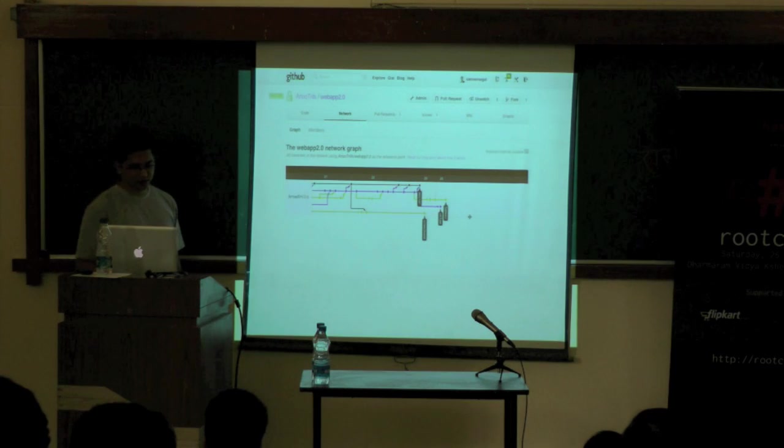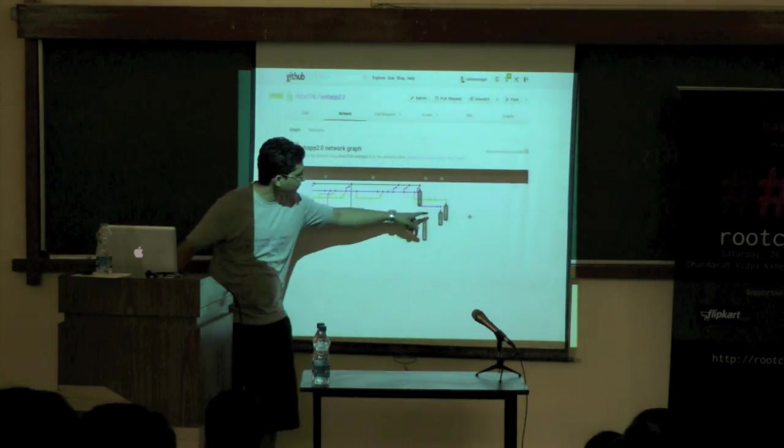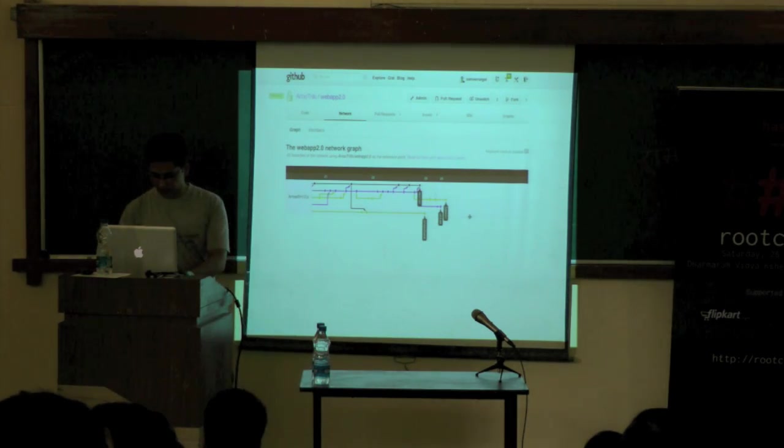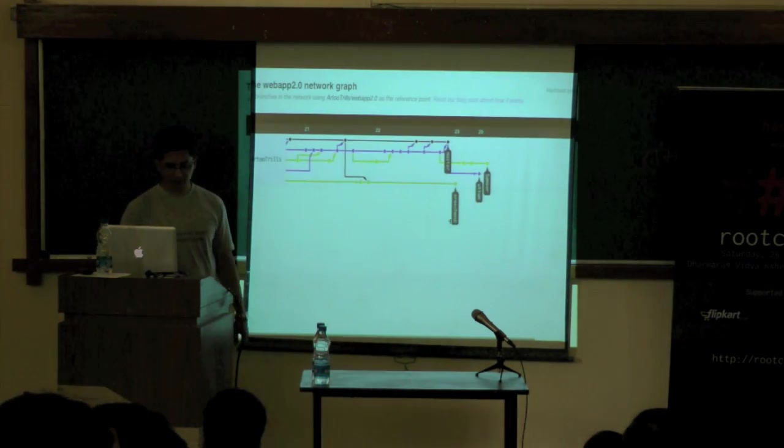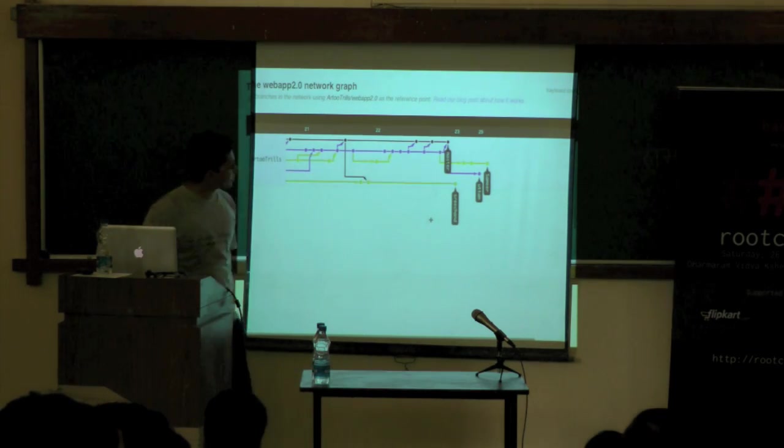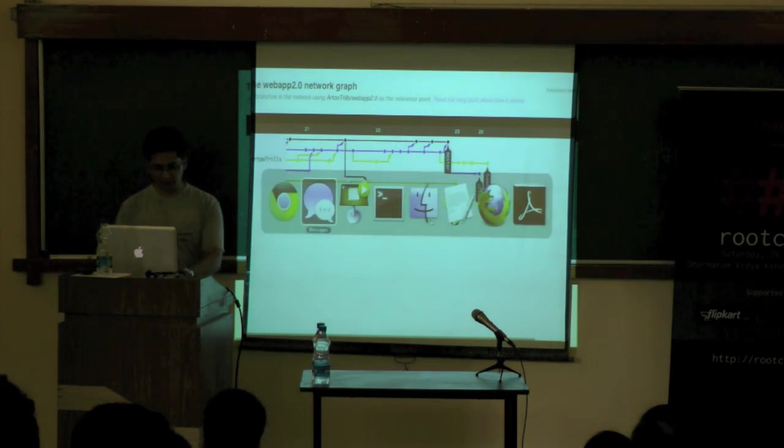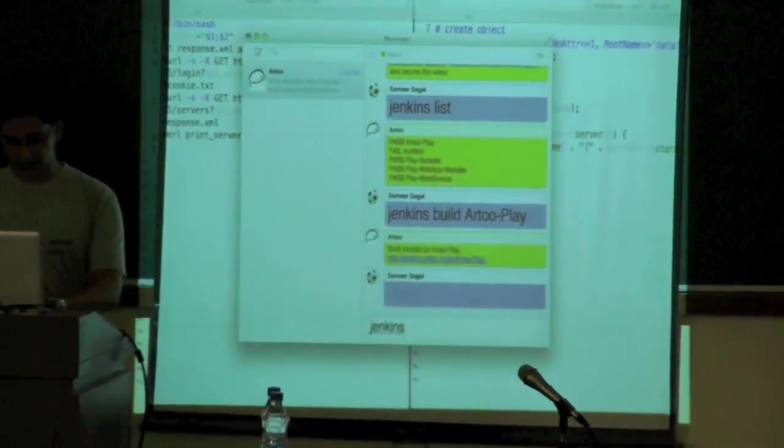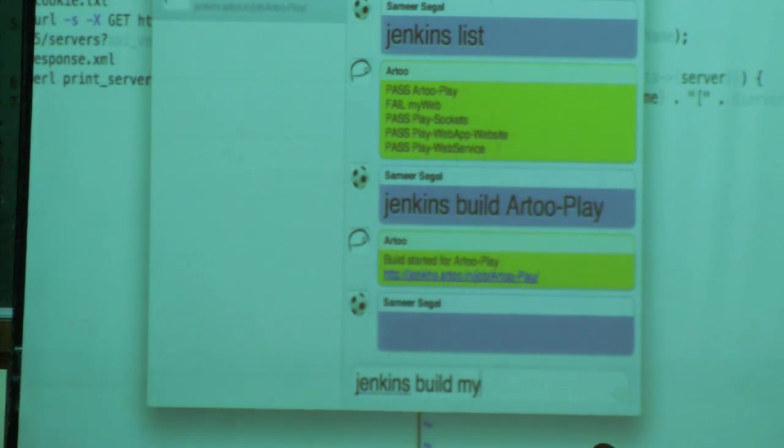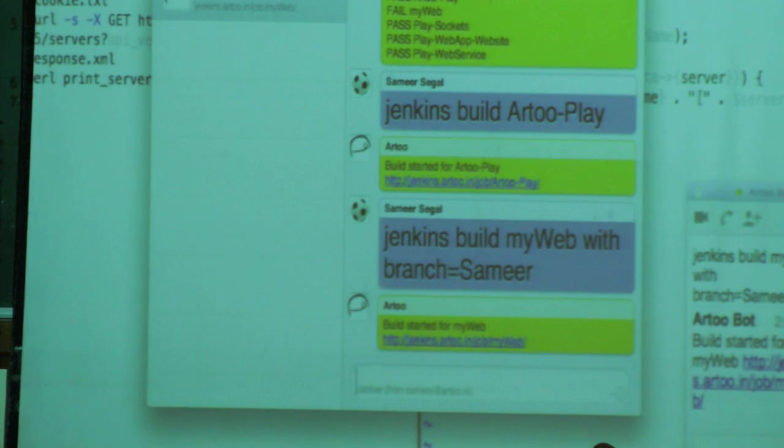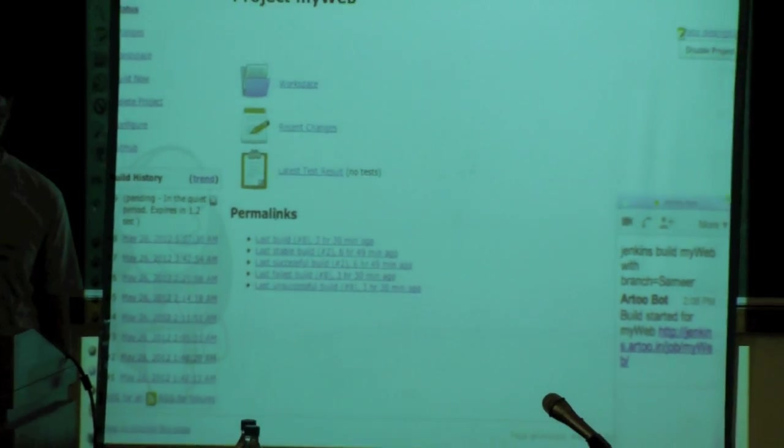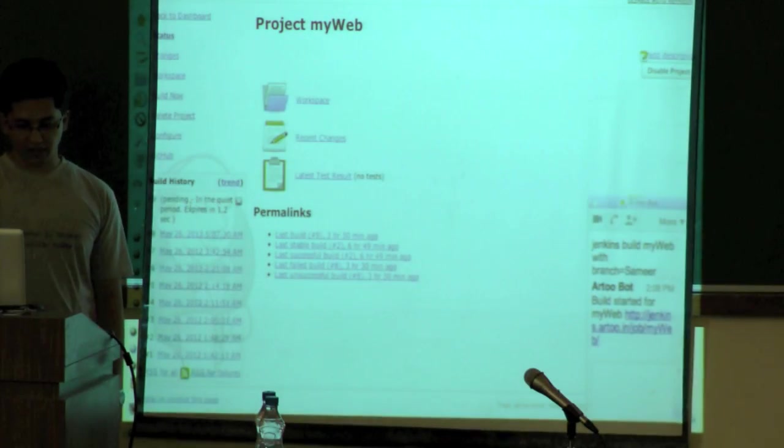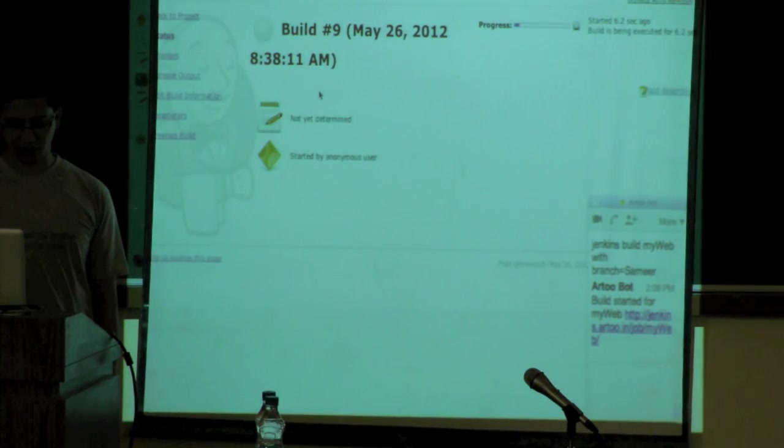Over here, you can see I have this simple project. I'm going to go into configure. And it takes a simple parameter called branch. You need to supply what branch do you want it to build. If you look at our GitHub, our GitHub repository looks like this. We have about three other branches apart from master. There are three other people who are working on this thing. So, now what I can do is if I am interested in just building my branch and see how it looks, I can say Jenkins build my web with branch equal to Samir.